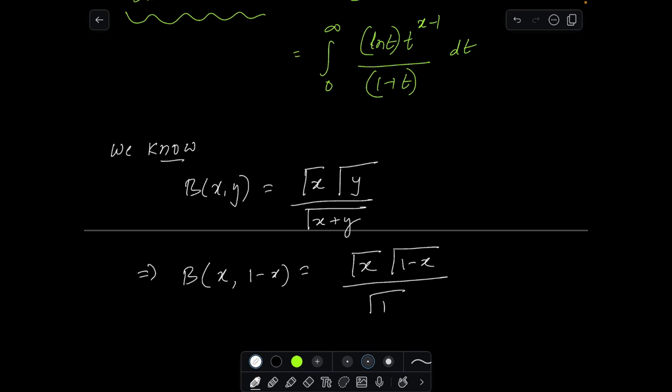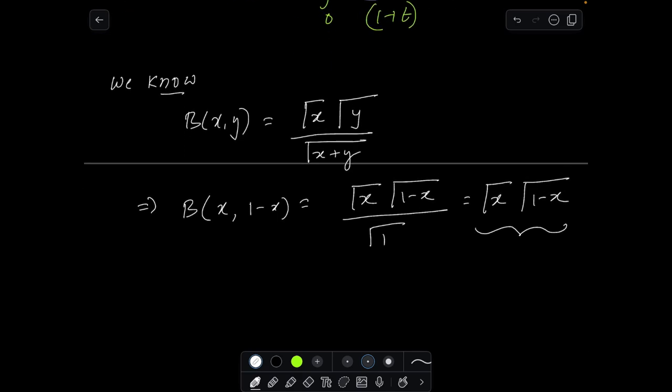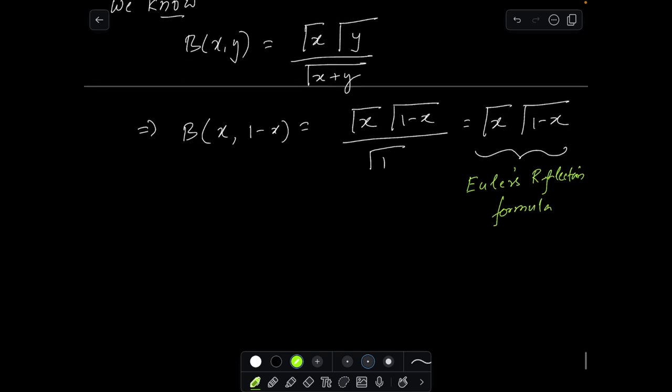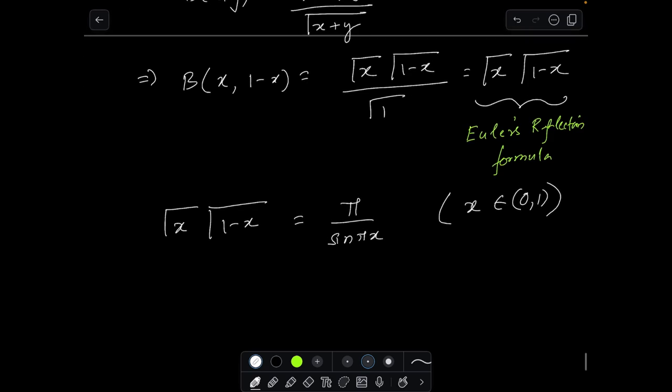So in light of this, what is beta x, 1 minus x? It will be gamma x gamma 1 minus x by gamma 1. Gamma 1 is 0 factorial, we all know that. Now this term is something which is very well known to the viewers—you can get this result by using Euler's reflection formula.